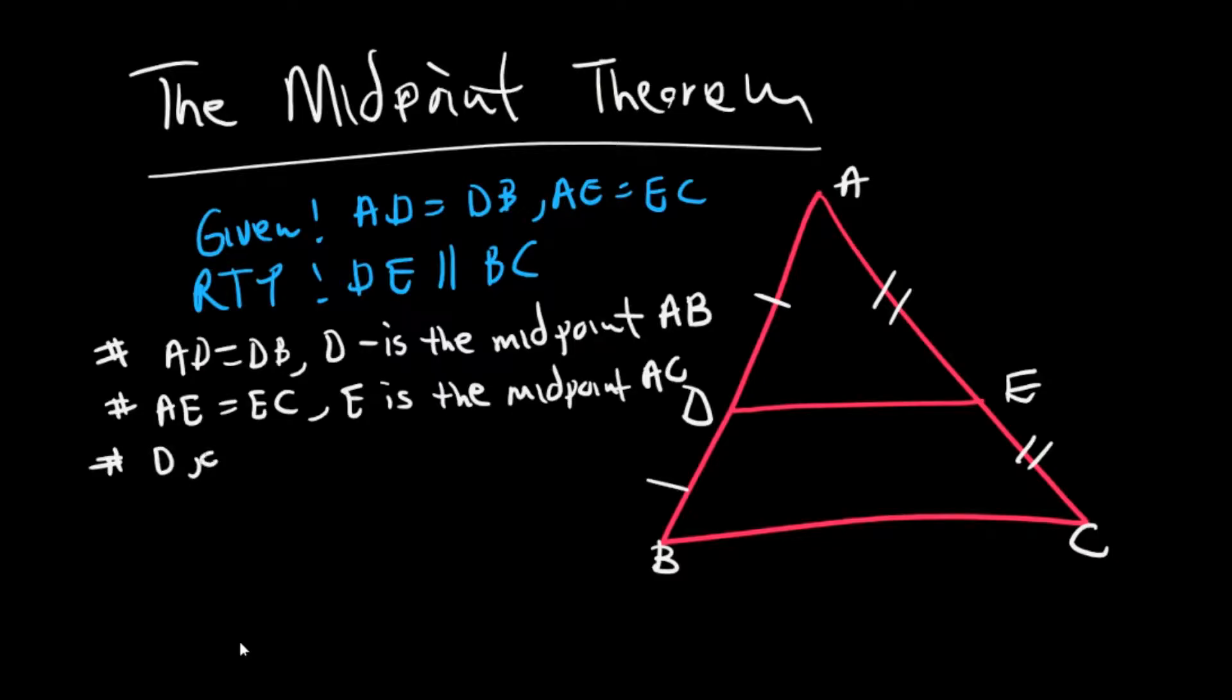D joins E to form line DE. Right, so once that line DE is formed, it confirms that therefore DE is parallel to BC. So once they are parallel and the sides are equal—this side being equals to this side, this side equals this side—it means that therefore you can say DE is